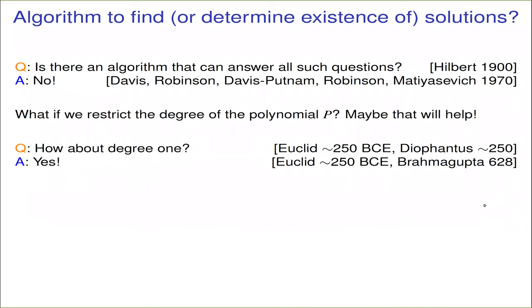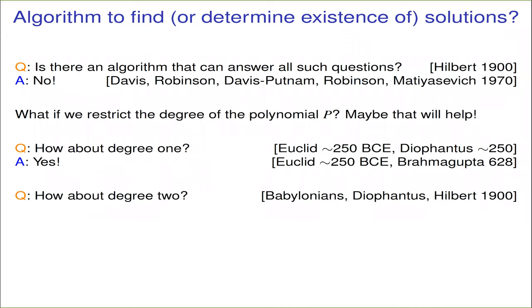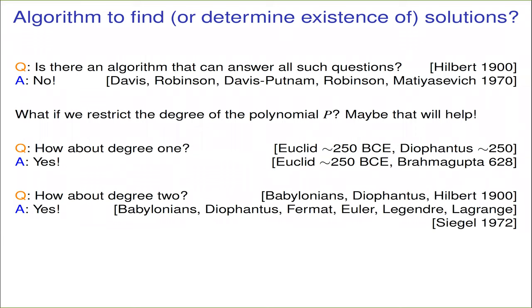That leads us to the question for degree two. Hilbert, perhaps anticipating the negative answer to his tenth problem, made his eleventh problem specifically about quadratic forms. He was really asking whether there's a method for determining which algebraic integers can be represented by a quadratic form over a given number field, but if we take Q to be our number field it specializes to the problem we're interested in. This is actually a more subtle problem than you might expect. You're probably familiar with the Hasse-Minkowski theorem, which gives us a straightforward way to determine whether a given quadratic form can be represented in the rationals, but this is really a question about integer solutions and it wasn't fully resolved until 1972 by Siegel.